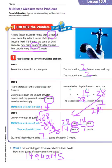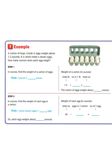Now, let's take a look at another example. In our second example, it says, A carton of large, grade A eggs weighs about 1.5, or 1 and 5 tenths pounds. If a carton holds a dozen eggs, how many ounces does each egg weigh? So, let's start with step 1. In ounces, find the weight of a carton of eggs. So, let's begin by thinking, 1 pound equals 16 ounces.